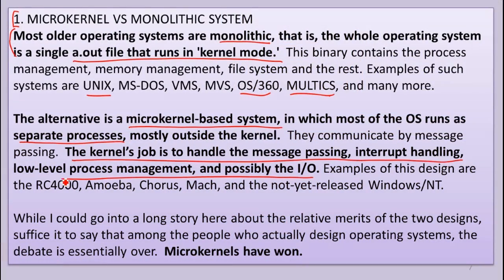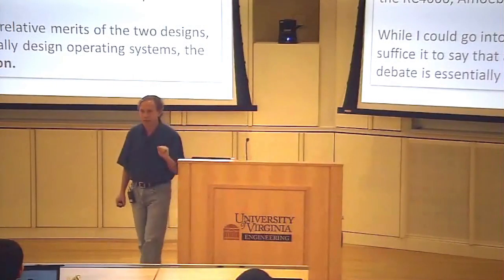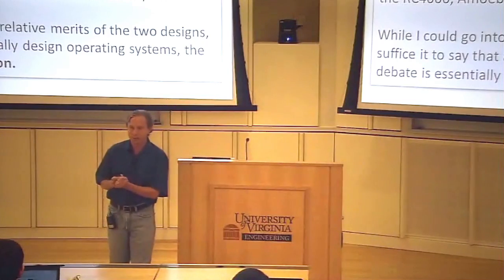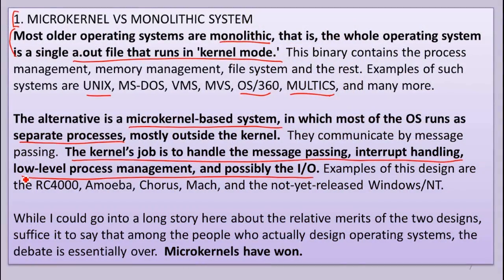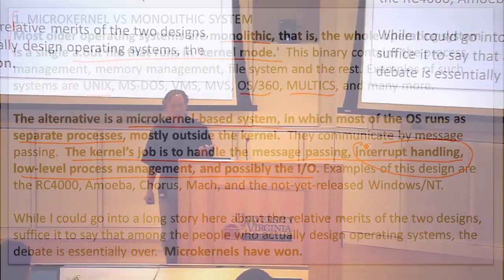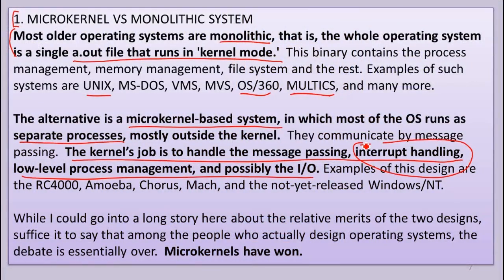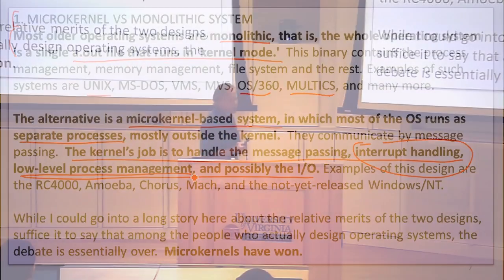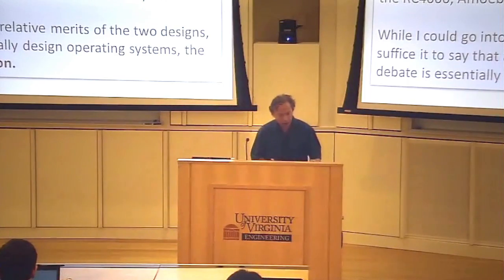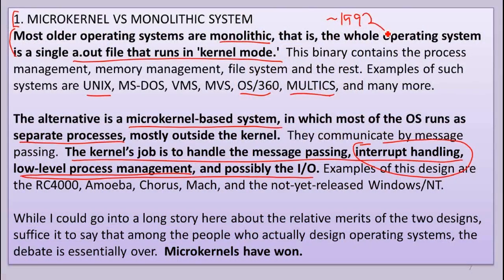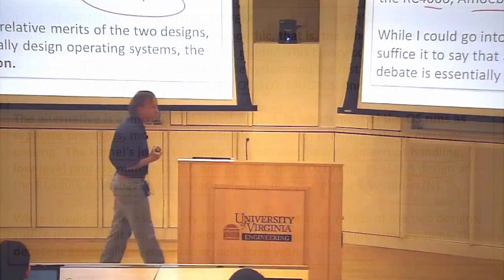That means it's the kernel's job to do only what's really necessary. The things basically needed to provide the process abstraction include interrupt handling — something needs to get interrupts to the right place, and that seems like the kernel should do that. You also need low-level process management, things that allow you to set up the virtual memory abstraction. He's a little on the fence about the file system, saying maybe some I/O can be part of the kernel. This was 1992, and part of the reason for thinking the future would be all microkernel-based was that Windows NT was being thought of as a microkernel system.